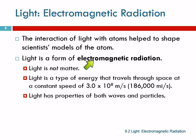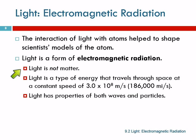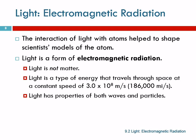Light is a form of electromagnetic radiation. It's a type of energy. Light is not matter — we define matter as something that occupies space and has mass. Light doesn't have mass, so light is not matter. It's a type of energy. Light travels at a constant speed: 3.0 times 10 to the 8th meters per second.